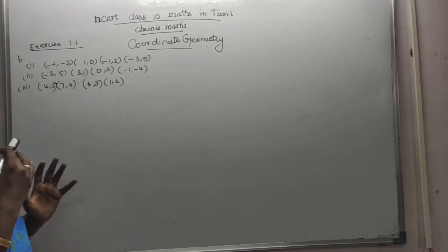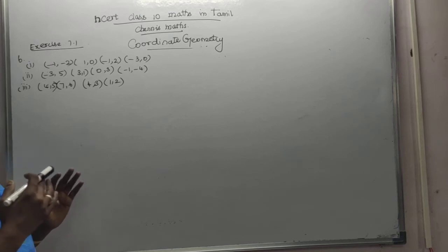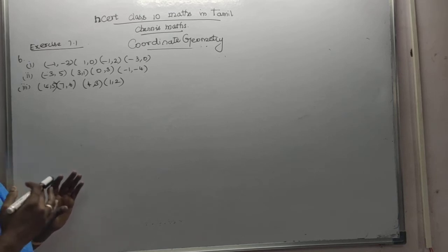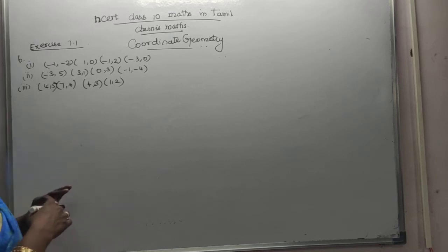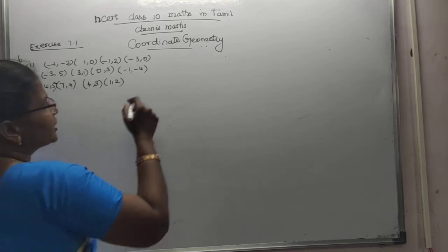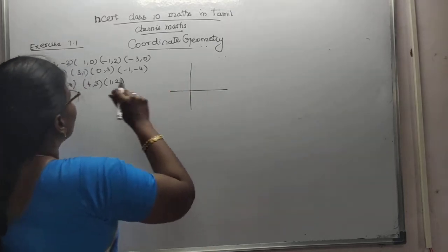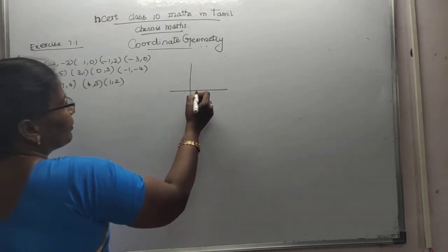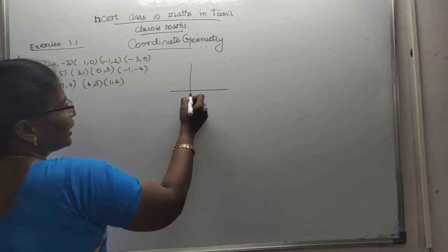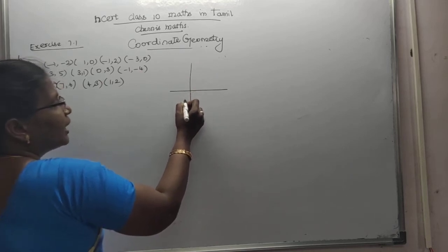The points are A, B, C, D. Let's look at the points here. First point A is (minus 1, minus 2), so minus 1, minus 2. Then point B is (1, 0), so 1, 0.